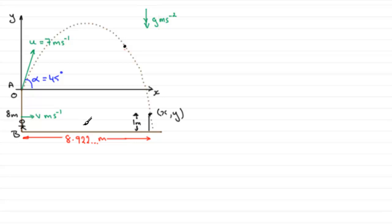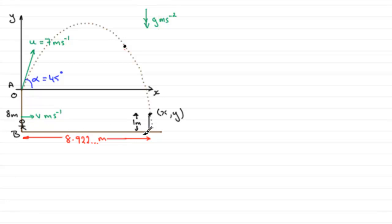So how are we going to do this kind of question? First of all, I'm going to find out the time it takes for the ball to reach the point where it's one metre above the beach. When I've got that time, I'll take away 0.4 seconds, and that will give me the time it takes the boy to run at speed V over the distance of 8.922 metres. Then I can use the equation V equals distance divided by time.